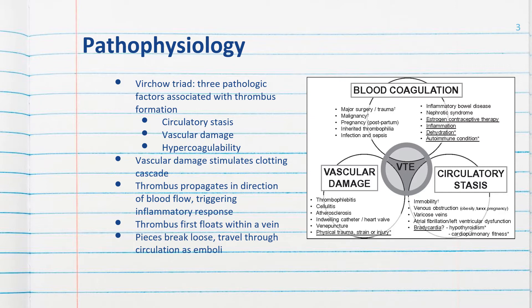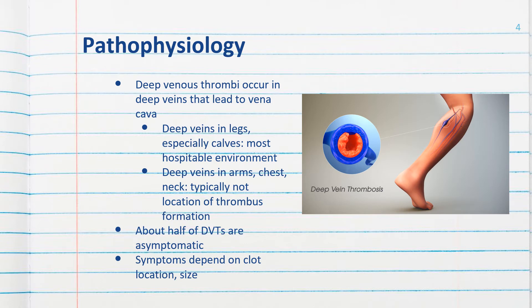Including inflammation and autoimmune disorders — so many things can lead to these various pathologic factors associated with thrombus formation, which you see in the middle of the diagram as venous thrombosis or embolus. Deep venous thrombi occur in the deep veins of the body that lead to the vena cava. The deep veins of the legs, primarily in the calves, and of the pelvis provide the most hospitable environment for venous thrombosis formation.